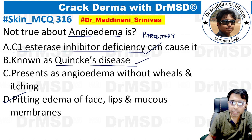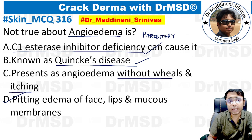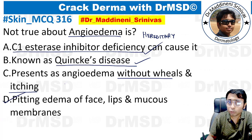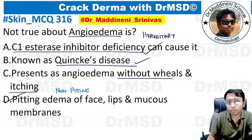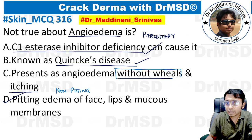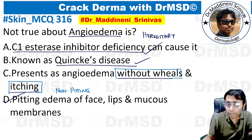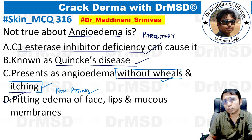Option C states angioedema presents without wheals and itching — this statement is also right. The characteristic of angioedema is that there is non-pitting edema, which will not be associated with any wheals as we see in urticaria. Urticaria has wheals and itching, whereas in angioedema there will not be any itching, wheals, or pitting.